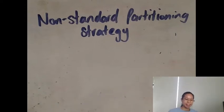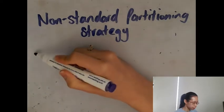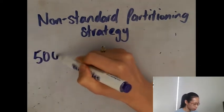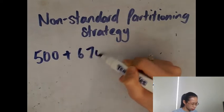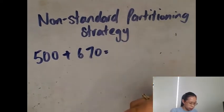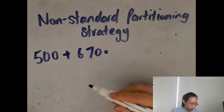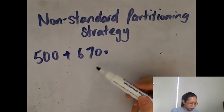Hi everyone, this is Miss Tang. I'm going to show you how to do the non-standard partitioning strategy. So if I've got 500 plus 670, what you can do is break up your second number.